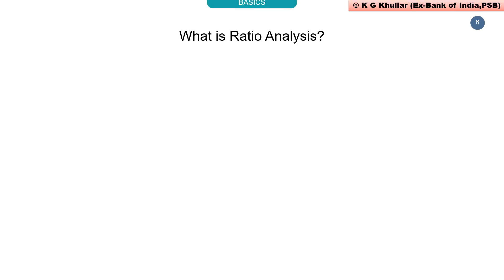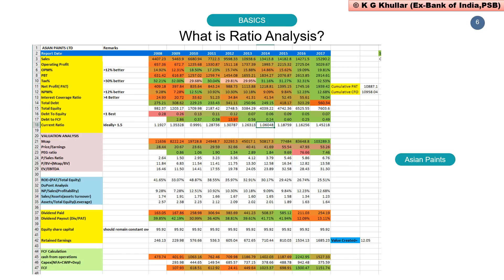I most often use an Excel template to analyze the performance of any firm. This is a screenshot of my Excel template where I am analyzing Asian Paints, one of the leading paint manufacturers of India. The red cells show the financial troubles of the firm, while green cells show its stability. I calculate all these ratios and analyze the stability of the firm over the years.